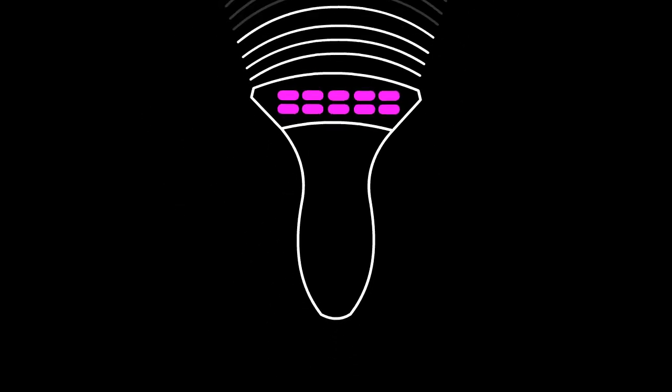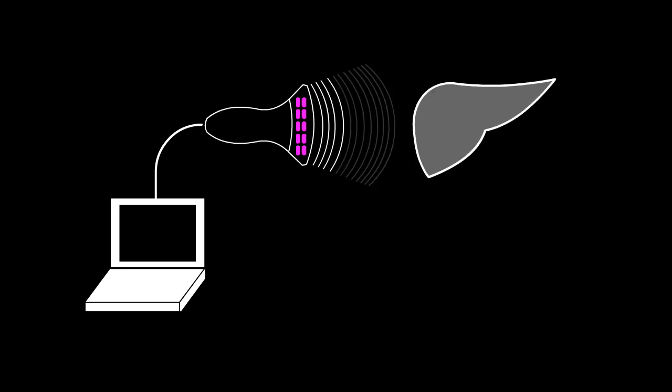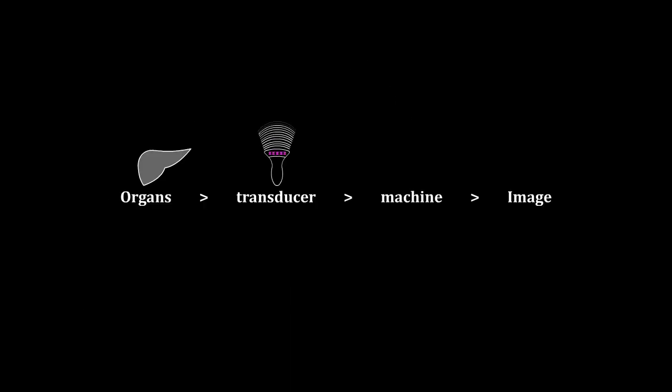Following the production of sound waves, they are directed towards the internal structures of the body and subsequently reflected back to the crystals by the organs. The returning sound waves then cause the crystals to vibrate, creating electrical energy within them. This electrical energy is measured by the machine and interpreted as an image.